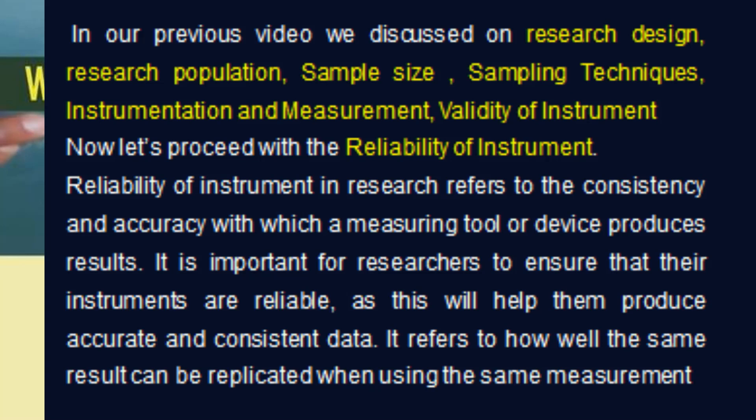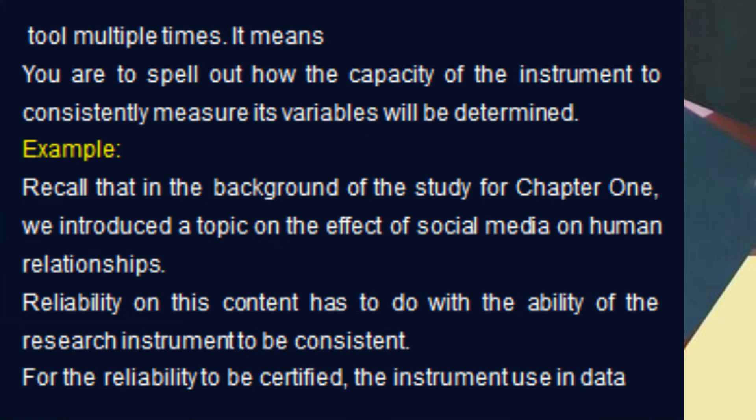Now let's proceed with the reliability of instrument. Reliability of instrument in research refers to the consistency and accuracy with which a measuring tool or device produces results. It is important for researchers to ensure their instruments are reliable, as this will help them produce accurate and consistent data. It refers to how well the same result can be replicated when using the same measurement tool multiple times — meaning you are to spell out how the capacity of the instrument to consistently measure its variables will be determined.